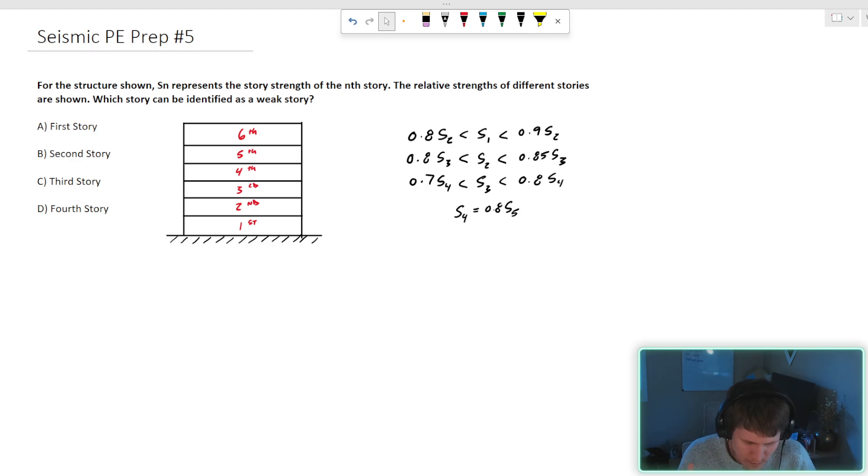For the structure shown, S sub n represents the story strength of the nth story. Kind of sounds mathy, kind of sounds a little scary. It's not. It's just saying S sub n is the strength of the story that you're looking at. The relative strengths of different stories are shown. That's this criteria over here.